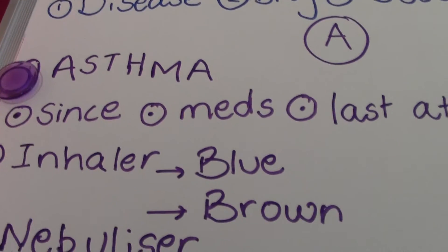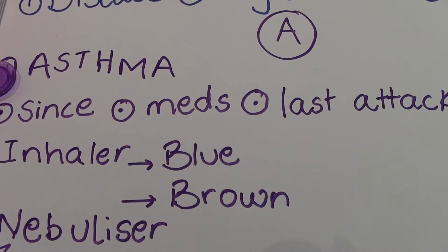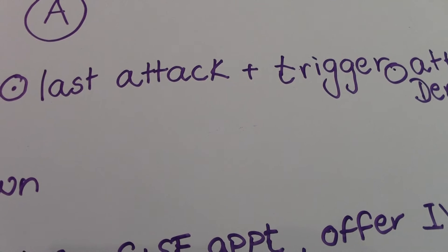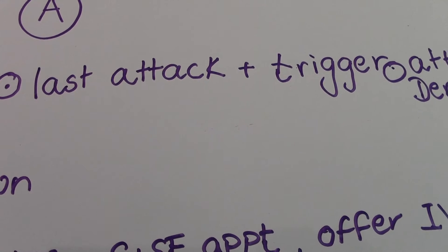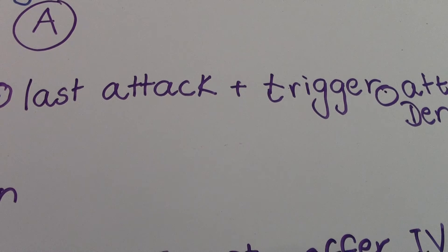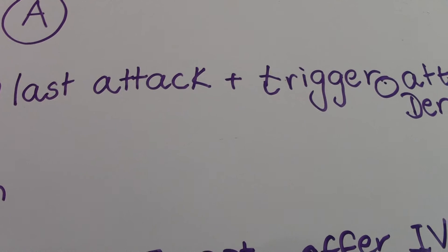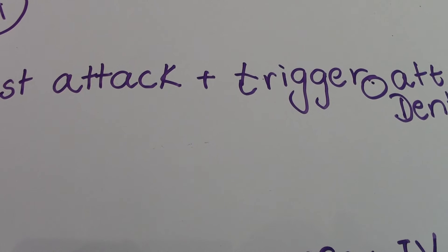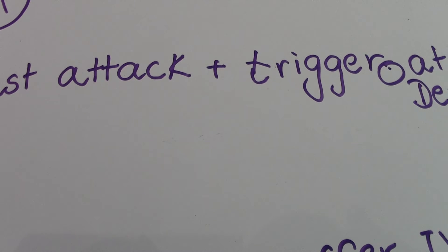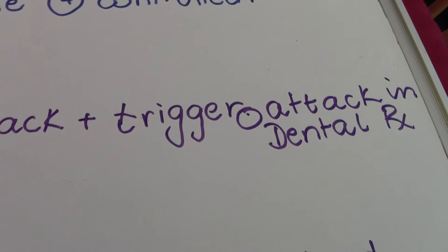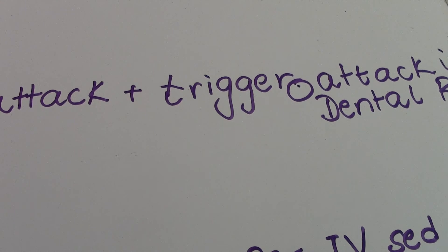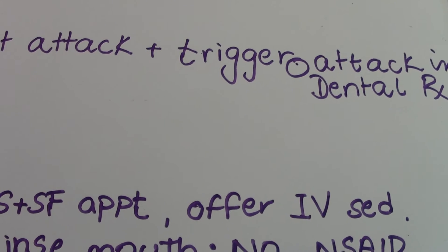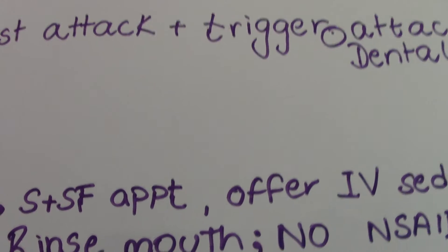Starting with asthma — for any condition you want to ask since when they've been having it, what medications they take for it, when the last attack was, and what triggers the attack. The trigger can be anything in asthmatics; it could be stress. Write that down in the notes. For any condition where stress is a trigger, we always note that short and stress-free appointments should be given. Also ask whether they've had an asthmatic attack during any dental treatment, because if they have, or if stress triggered it, there's a chance it could happen again.